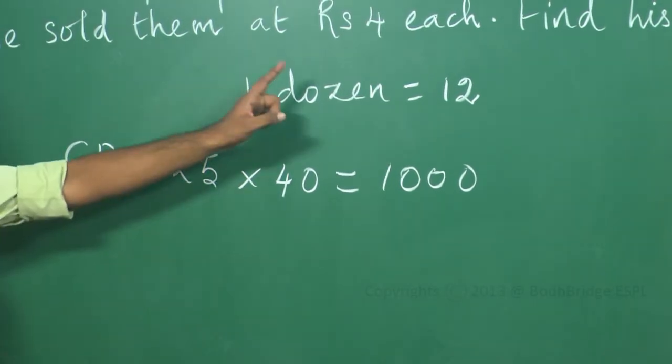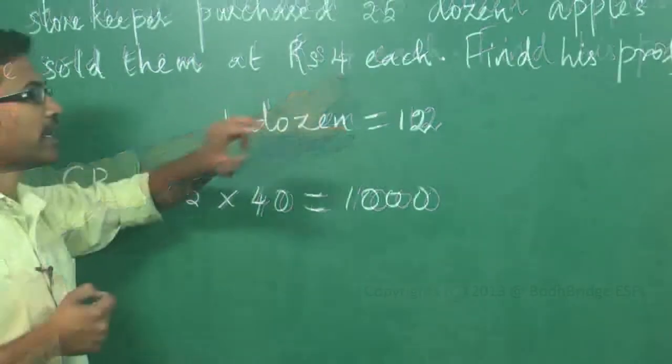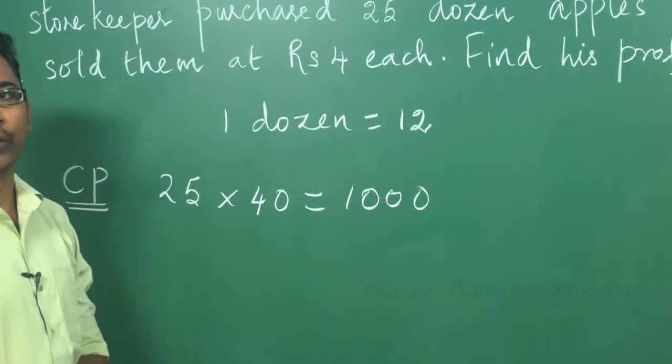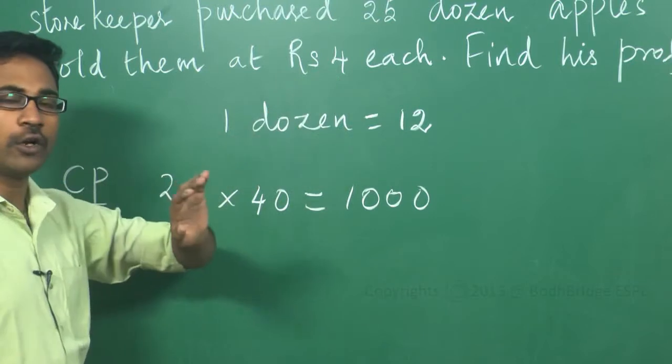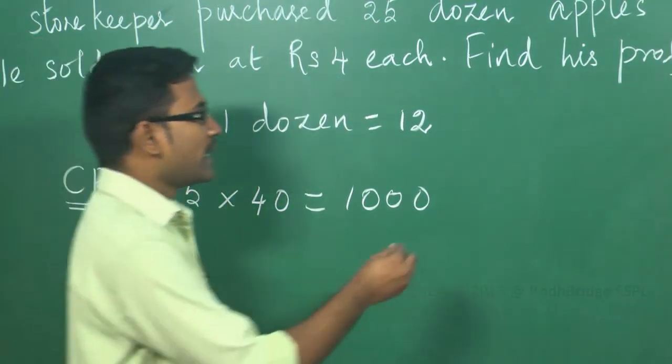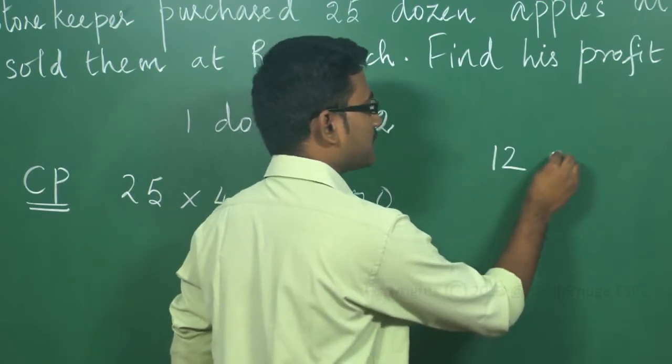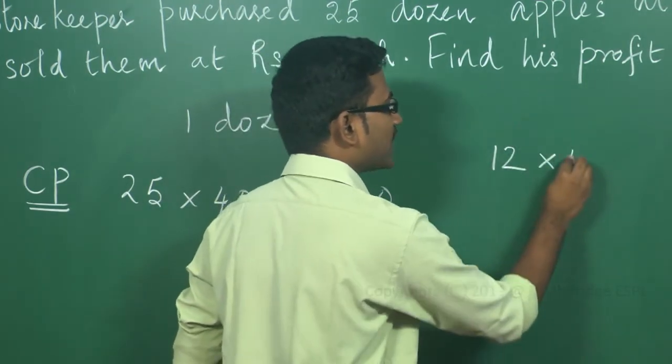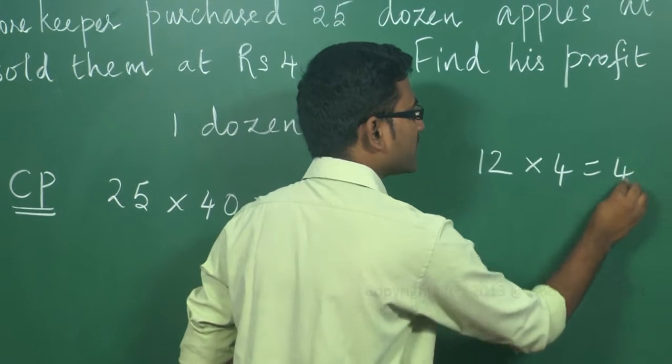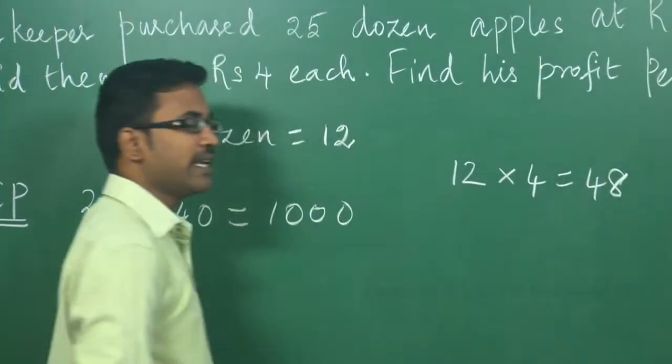Then, every single apple is selling for Rs. 4. Here, he's selling for Rs. 4 each. So, 1 dozen into—1 dozen will be 12 apples. If 1 apple he is selling for Rs. 4, then 1 dozen he is selling for Rs. 48.